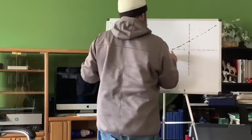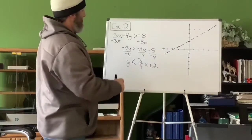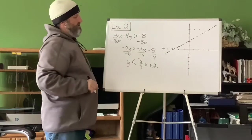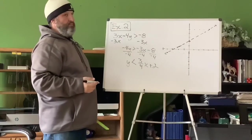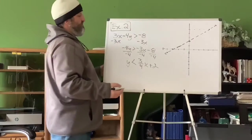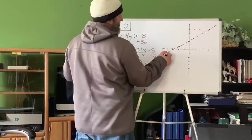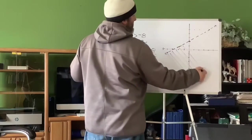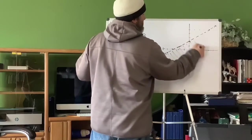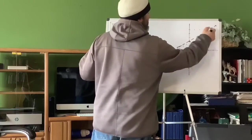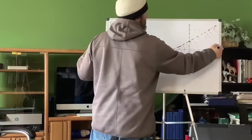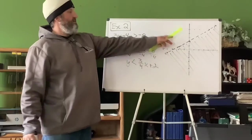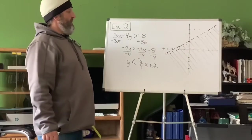We have a dotted line because it's not equal to — it's strictly less than. Less than means we have to shade below. Going back to the roof analogy: the snow is underneath the roof, which is not where you want it — less than, shade below.